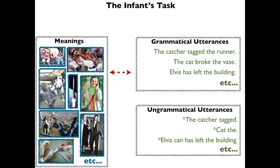The only option is to learn generalized, productive procedures. Unfortunately, the wrong generalizations are almost as bad as no generalizations, since you'll undergeneralize, overgeneralize, or just generally produce gibberish. So a core scientific question about language acquisition is: how do children end up with the right generalizations?